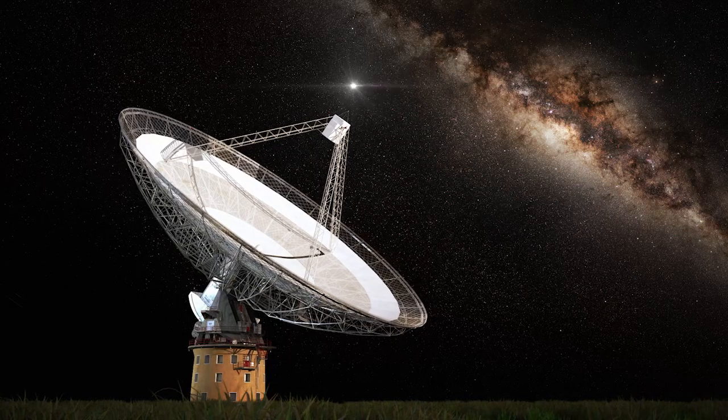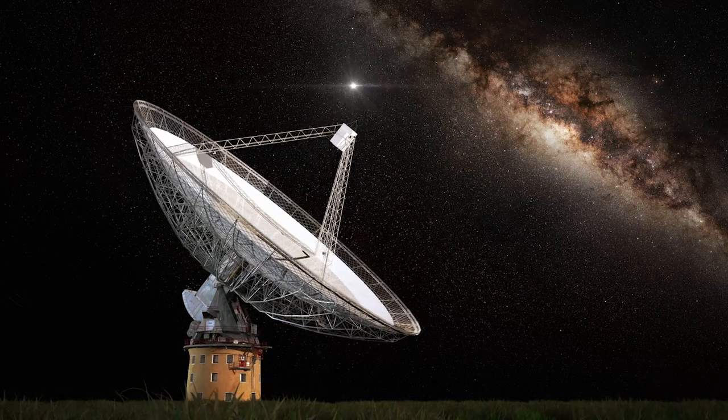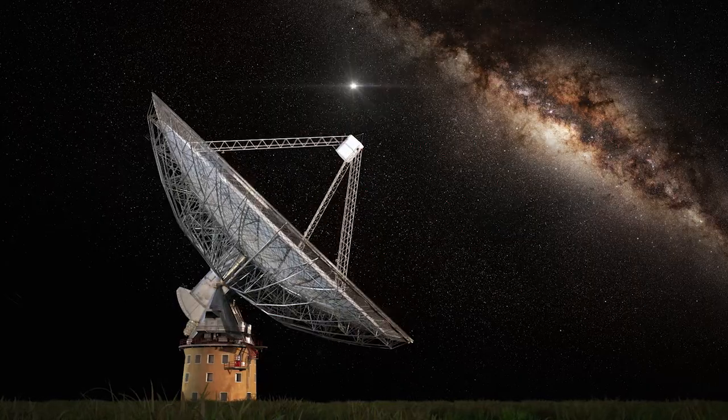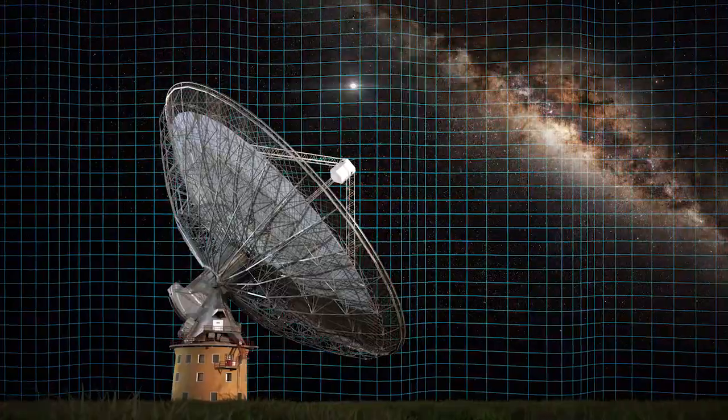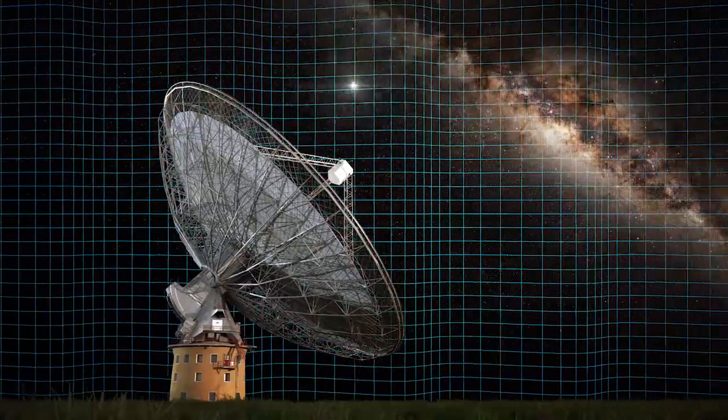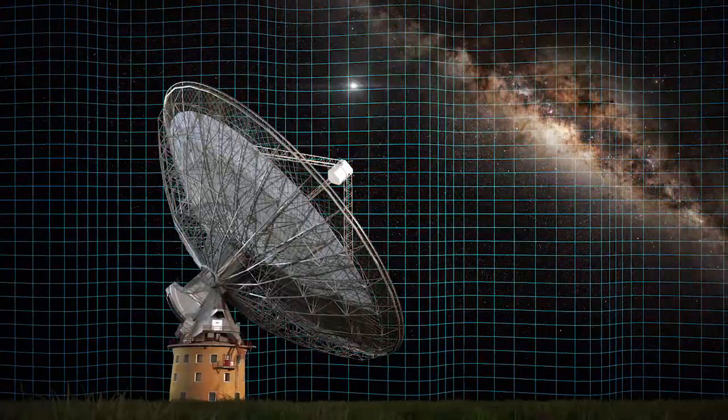We've used the CSIRO Parkes Radio Telescope to monitor 20 pulsars in our galaxy over many years. Gravitational waves passing through our galaxy will cause the times between pulsar ticks to slowly change.